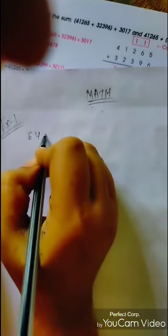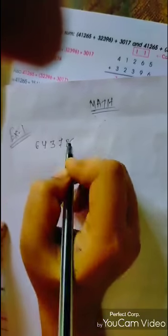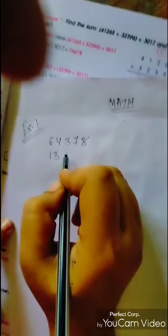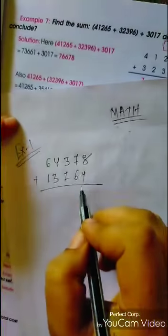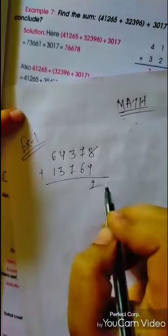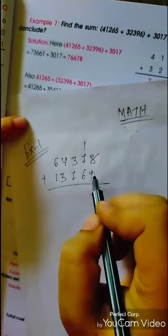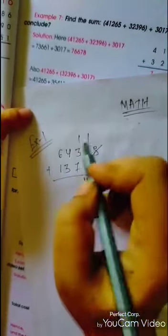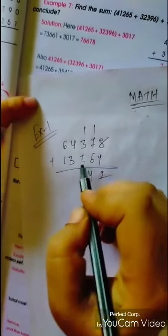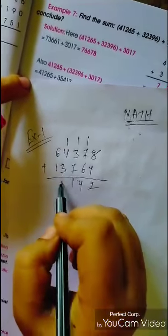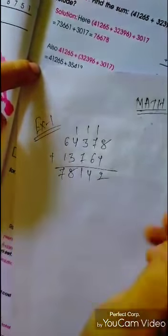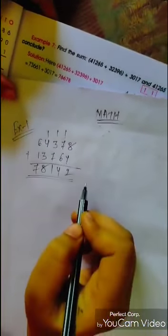Example 1: the numbers are 64,378 and 13,764. Now we add these. 8 plus 4 is 12, write 2, carry 1. 1 plus 7 is 8, 8 plus 6 is 14, write 4, carry 1. 1 plus 3 is 4, 4 plus 7 is 11, write 1, carry 1. 1 plus 4 is 5, 5 plus 3 is 8. Then 6 plus 1 is 7. So our answer is 78,142.